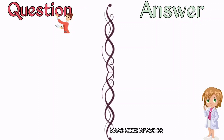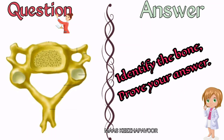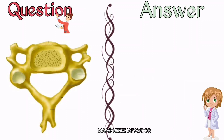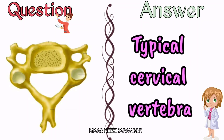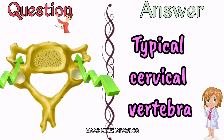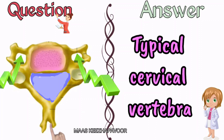Identify the given bone and prove your answer with its features. The given bone is a typical cervical vertebra. Presence of foramen transversarium, bifid spine, kidney-shaped body, and triangular vertebral foramen prove that it is a typical cervical vertebra.